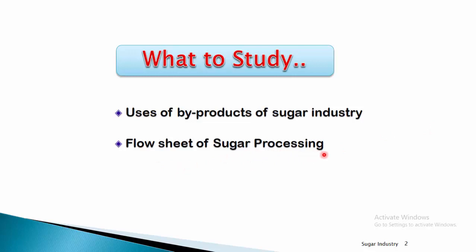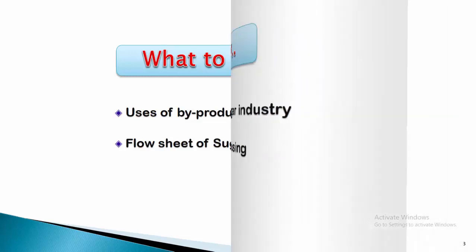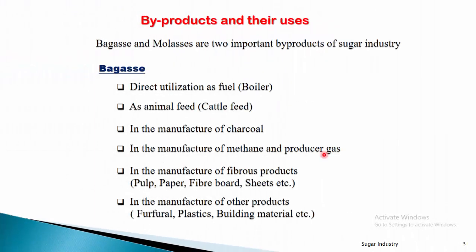We will study the important applications or uses of these byproducts, and at the end we will see the flow sheet of sugar processing — meaning what we studied theoretically will be presented in a schematic way. Bagasse and molasses are the two important byproducts of the sugar industry.